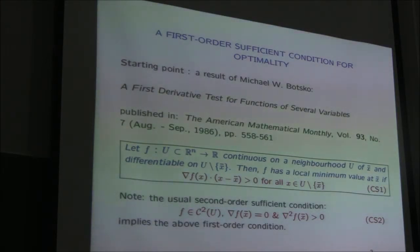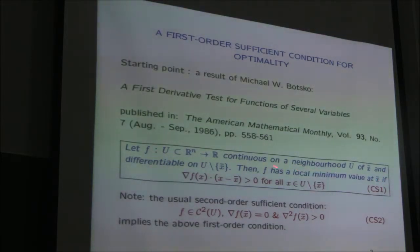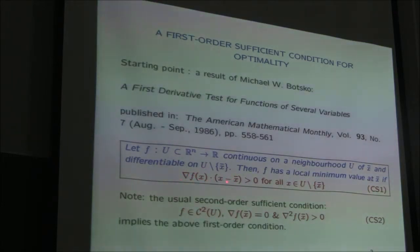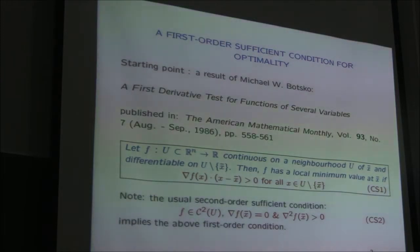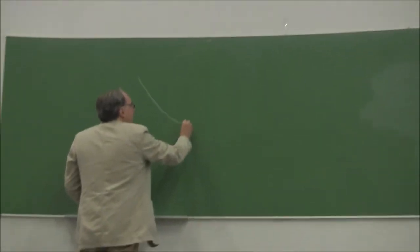The idea is to give a sufficient condition of the first order, which is not so common. Usually a sufficient condition for optimality is of second order. This is a condition of the first order. You have a function defined on a finite dimensional space, continuous on the neighborhood of a point, and differentiable everywhere except possibly at the point x-bar.